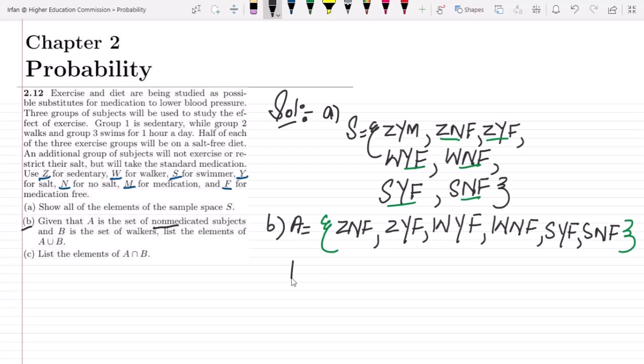Similarly for B, what do we have to do? The set of walkers. So the set of walkers are these two: WYF and WNF.